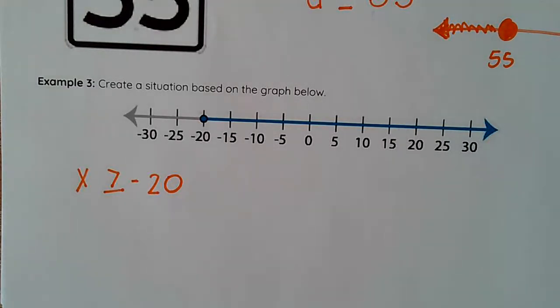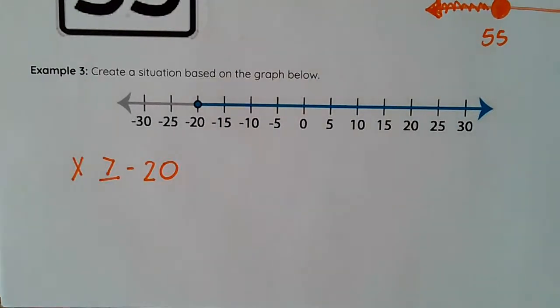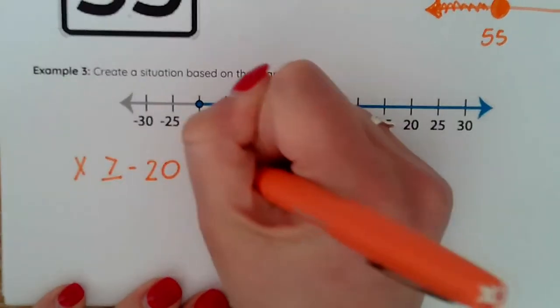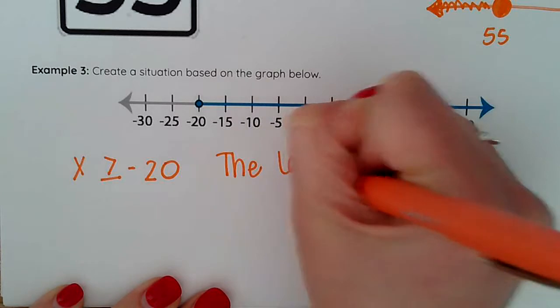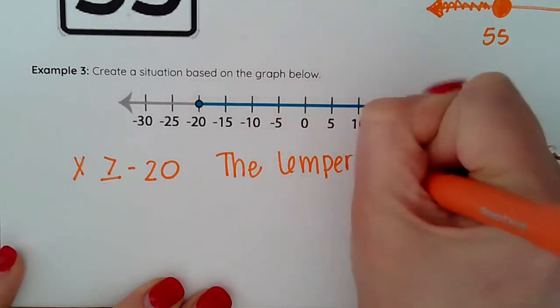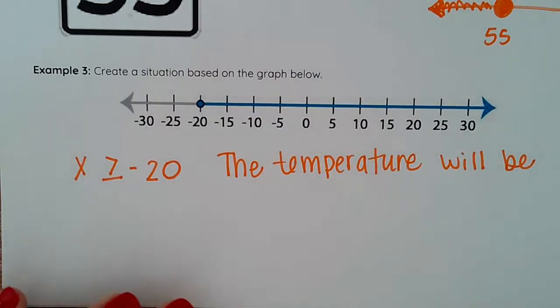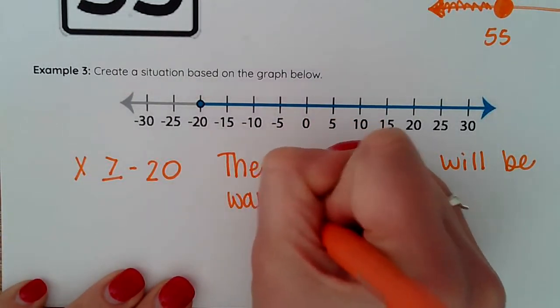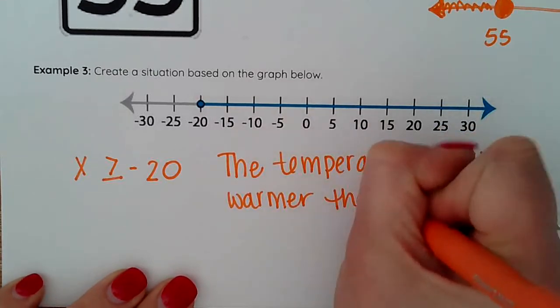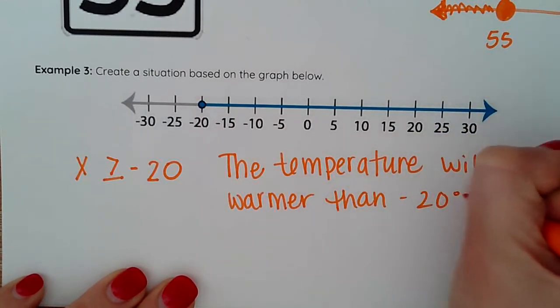So now I need to determine what my situation is and you should get creative. I mean there's all sorts of things they can be true or not. Try and make them something that you've heard of or you've seen before or something along those lines. So what I'm going to say is the temperature will be warmer than negative 20 degrees Fahrenheit.